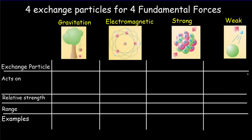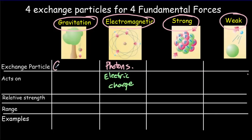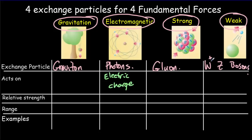Each type of field has its own exchange particle. For electromagnetic fields, the exchange particle is photons — photon-like disturbances — caused by electric charge, so the electromagnetic field acts on electric charge. If those charges are moving, we get the magnetic field. The other three fundamental forces are gravity, the strong force, and the weak force. The exchange particle for gravity is the graviton — nobody's ever detected one, so it's still theoretical. For the strong force, the exchange particle is the gluon. For the weak force, there are actually three exchange particles: the W+ boson, the W− boson, and the Z boson.